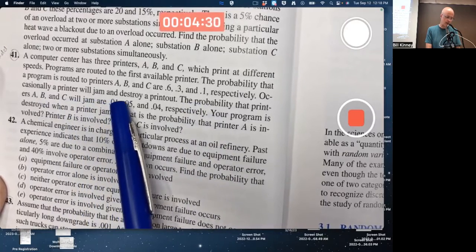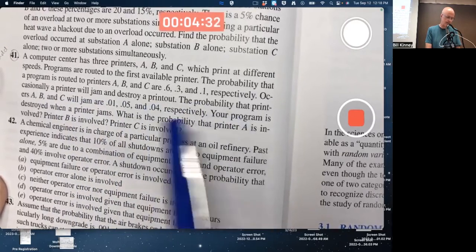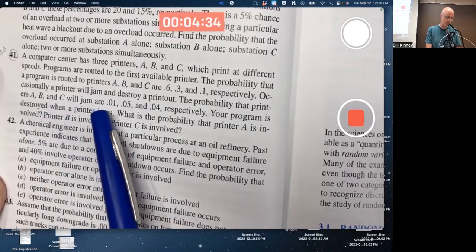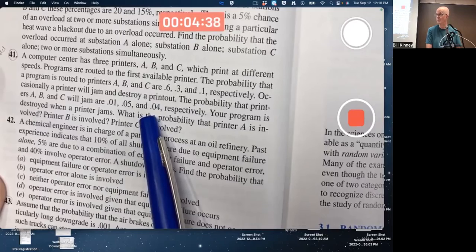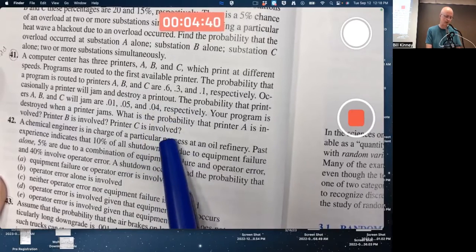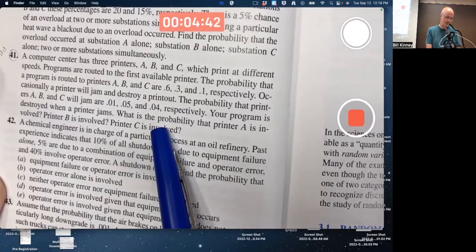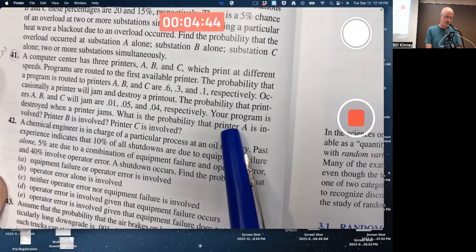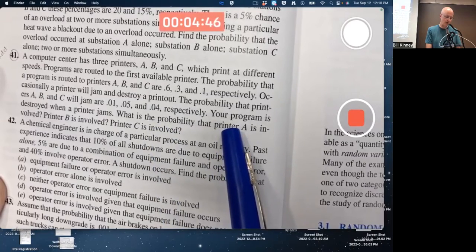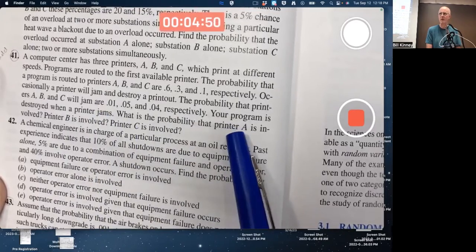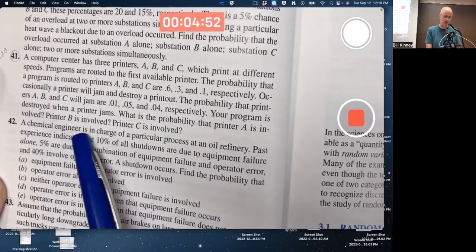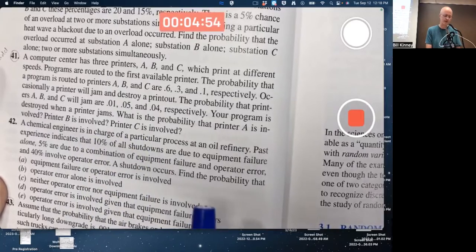Occasionally a printer will jam and destroy a printout. The probability that printers A, B, and C will jam are 0.01, 0.05, and 0.04 respectively. So A is the most trustworthy and that's nice that it gets the most jobs as well. You send your program to be printed and it jams. What's the probability that it was A? What's the probability that it was B? What's the probability that it was C?